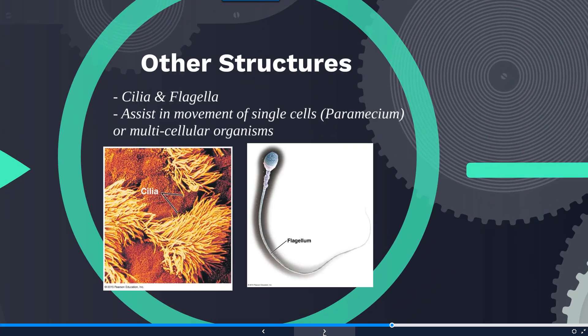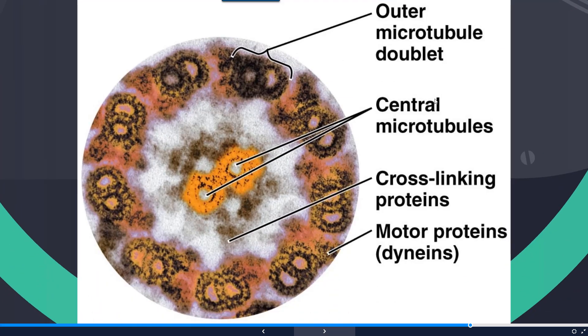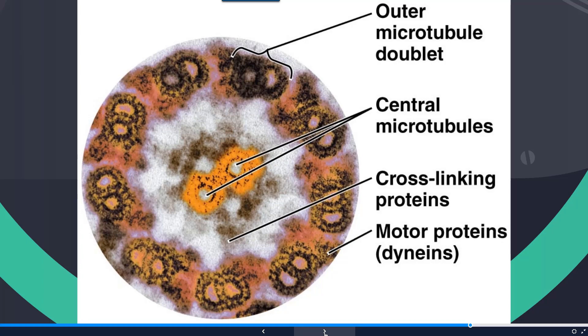A couple other structures associated with cells are cilia and flagella. These help assist in the movement of single cells such as in a paramecium, or in multicellular organisms, and are also used for harvesting or collecting substances as they pass by, such as the cilia shown on the left-hand side figure. Their structure consists of microtubules wrapped in an extension of the plasma membrane, forming what we call a nine-plus-two pattern in eukaryotic cells — nine pairs along the outside and two pairs on the inside.